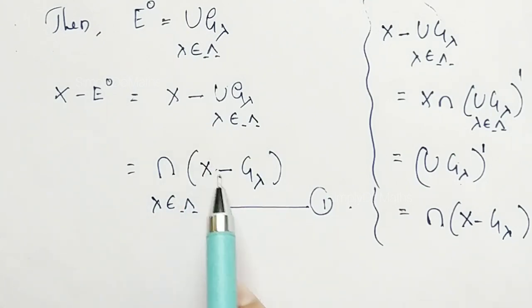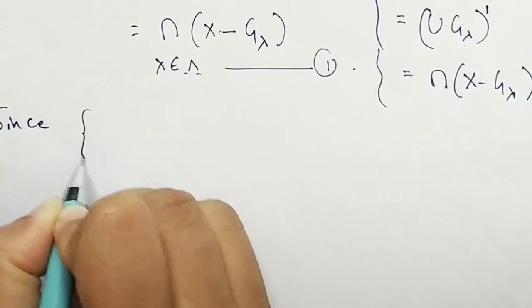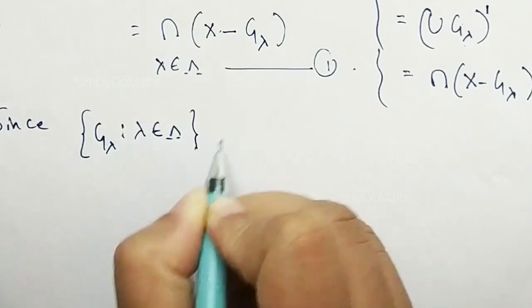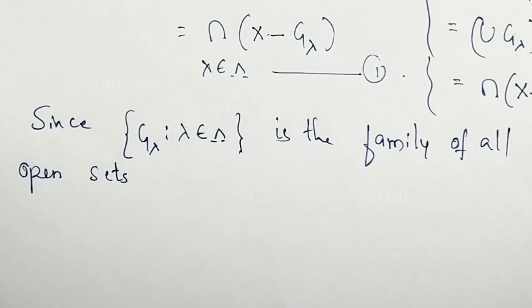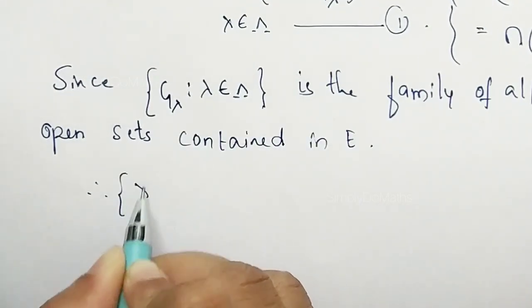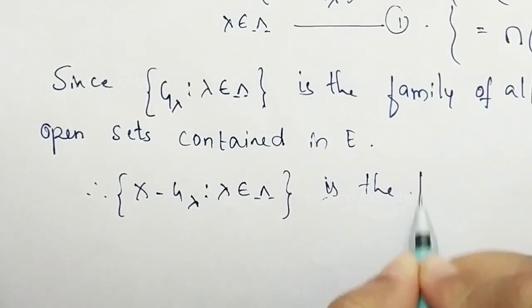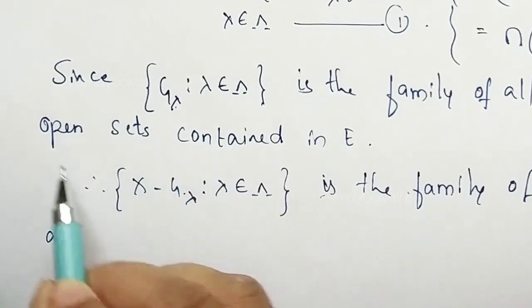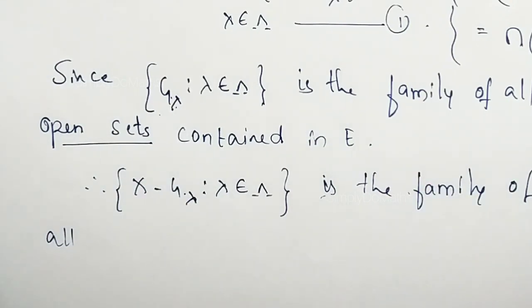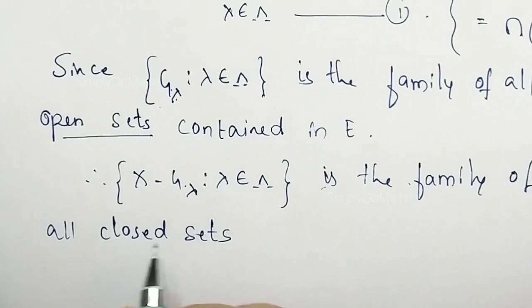Since G_lambda, where lambda belongs to the index set, is the family of all open sets contained in E, the family X minus G_lambda, where lambda belongs to the index set, is the family of all closed sets. As you know, the complement of an open set is a closed set, and the complement of a closed set is an open set.